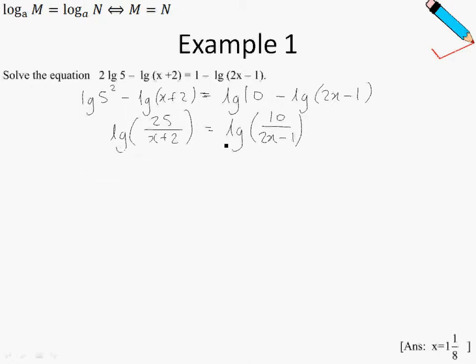Finally, at this point in time, to get rid of the log on both sides, we will take base 10. Or equivalently, we can just conveniently reduce the log. So this will give me this. And the next step will be to cross-multiply. So 25 times 2x minus 1 equals to 10 times x plus 2.